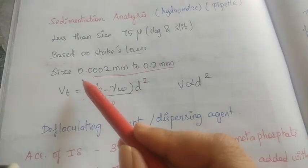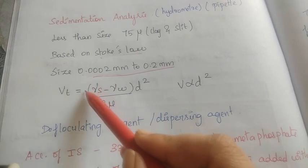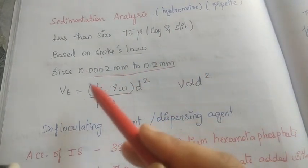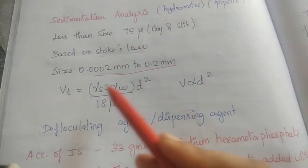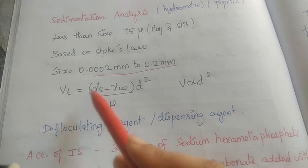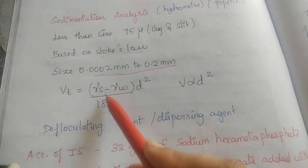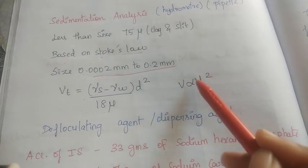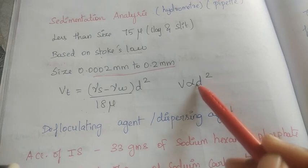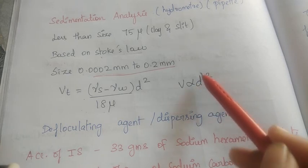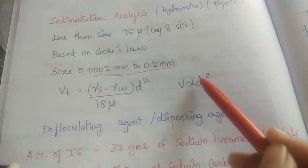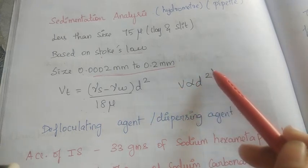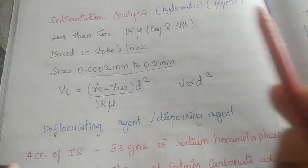This is the terminal velocity (Stokes' law). We use sedimentation when we use terminal velocity. The velocity is proportional to the grain diameter squared. The diameter is proportional to grain size. This is the basic formula for sedimentation analysis.